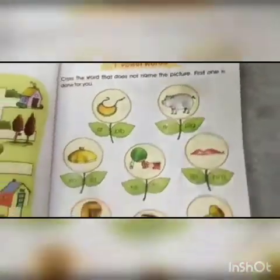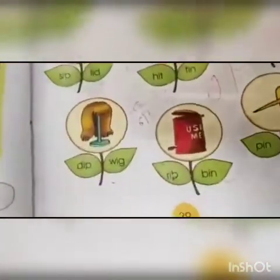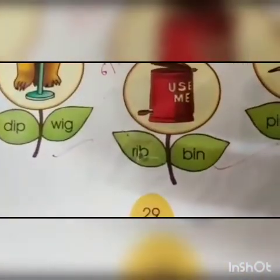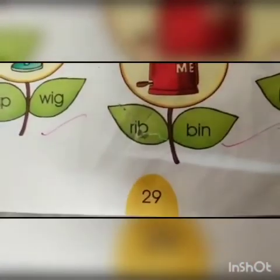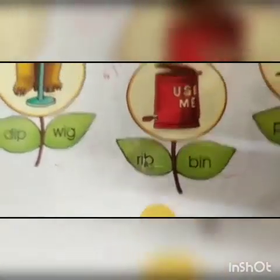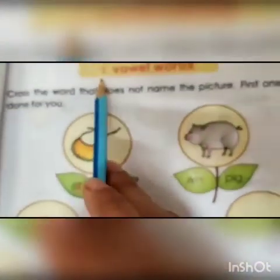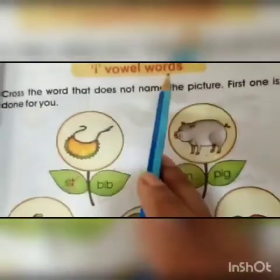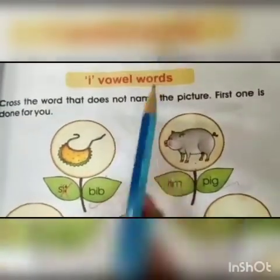Now open your book and go to page number 29. On this page, we will read I vowel words.